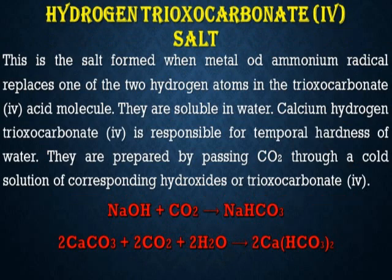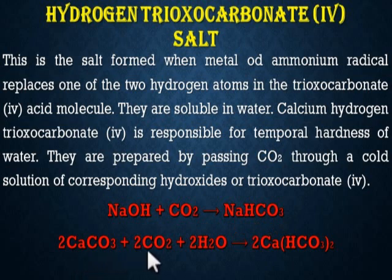Hydrogen trioxyl carbonate 4 is the salt formed when a metal or ammonium radical replaces one of the two hydrogen atoms in the trioxyl carbonate 4 molecule. They are soluble in water. Calcium hydrogen trioxyl carbonate 4 is responsible for the temporary hardness of water. They are prepared by passing carbon dioxide through a cold solution of the corresponding hydroxide or trioxyl carbonate 4. For example, sodium hydroxide reacts with carbon dioxide to give sodium hydrogen trioxyl carbonate 4. Also, two molecules of calcium trioxyl carbonate 4 combined with carbon dioxide and water give calcium hydrogen trioxyl carbonate 4.